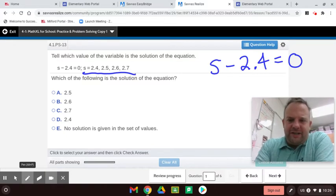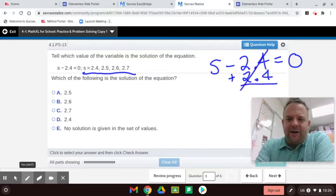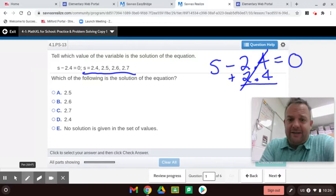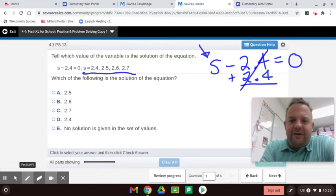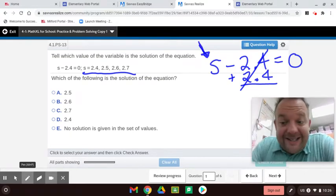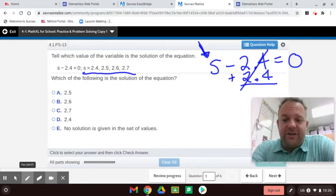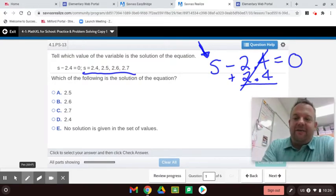Well, what we'll eventually get to is the inverse operation of subtraction is addition. So we'll add 2.4 here, and then that cancels out. Whatever you do on one side, you have to do on the other. So there are two rules to algebra, which you're learning now. That is, you want to find the variable. The variable is the letter, the unknown letter that represents an unknown term. You want to find the variable by itself. And in order to do that, you have to use inverse operations like it did here.